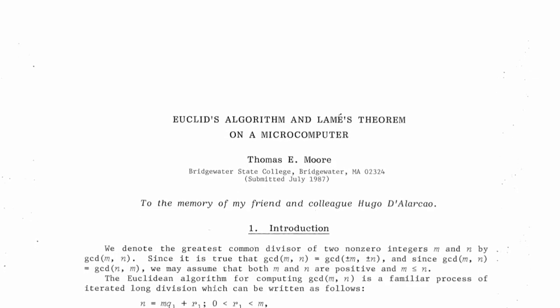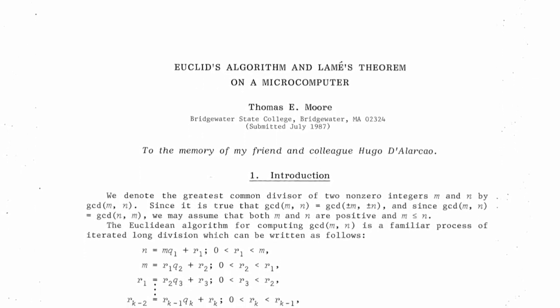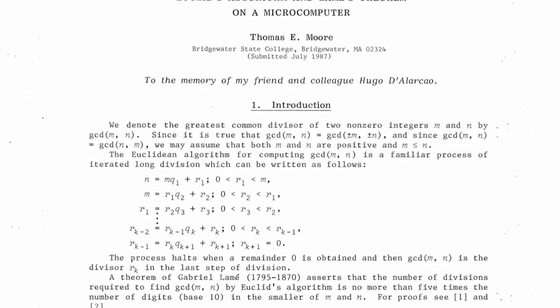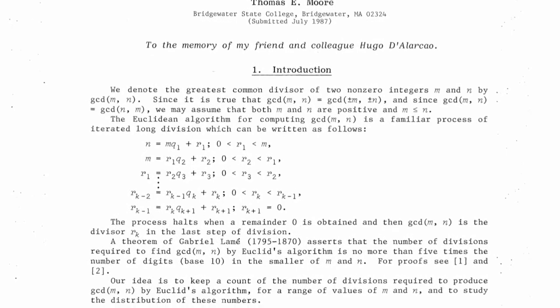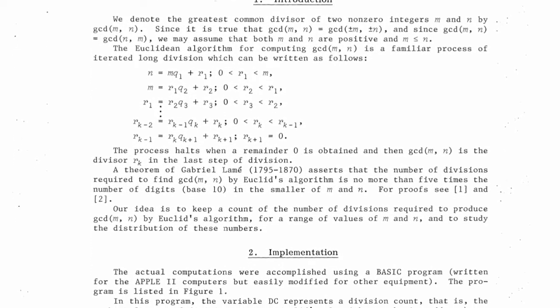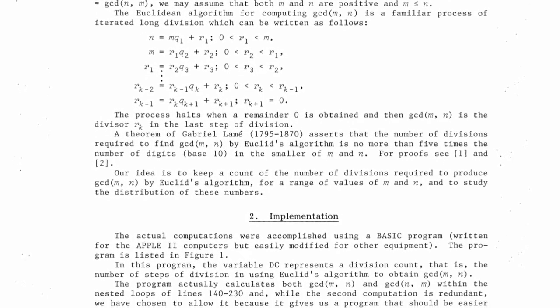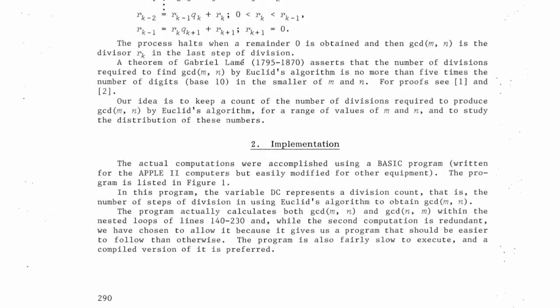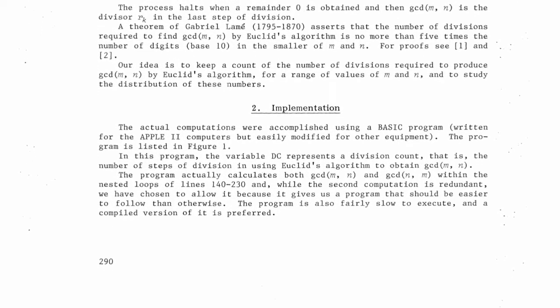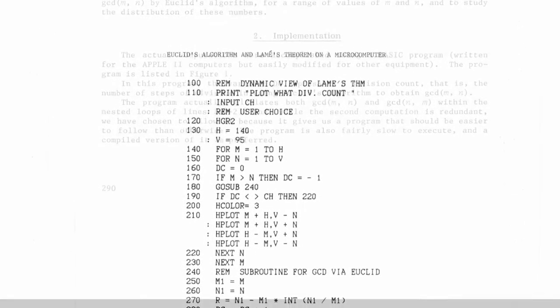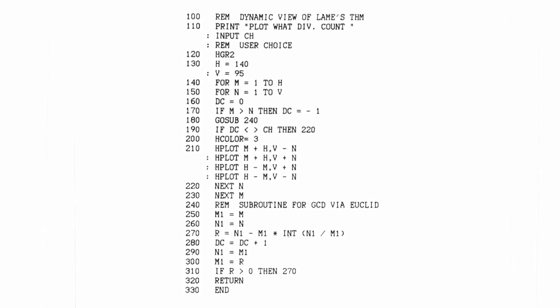Now, time for something visual. A paper by Thomas C. Moore, titled Euclid's algorithm and Lamé's theorem on a microcomputer, studies the distribution of pairs of integers requiring a fixed number of division counts, or DC, for GCD calculation. A basic program written for Apple II computers was used to prepare such strange and mysterious yet beautiful pictures or screen images.